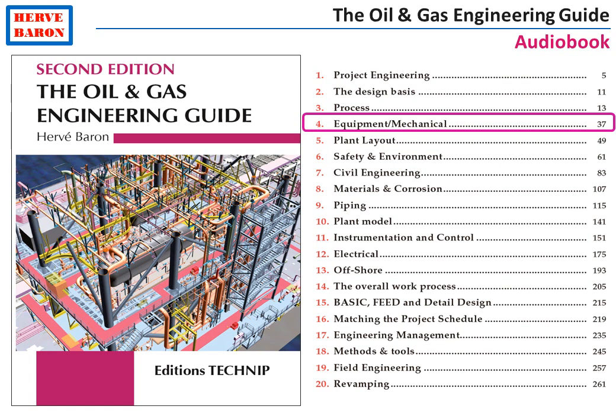Welcome to Chapter 4 of the Oil & Gas Engineering Audiobook. In this chapter, we describe the work and the deliverables of the equipment mechanical discipline. Its scope is to specify, select, and then follow up technically after the purchase order of the equipment of the plant.